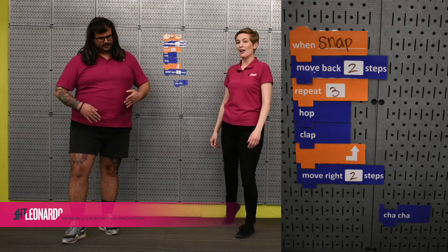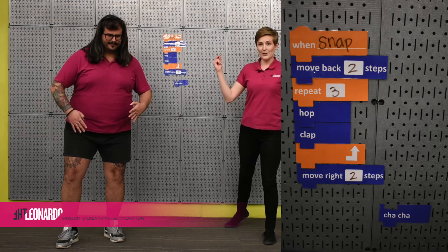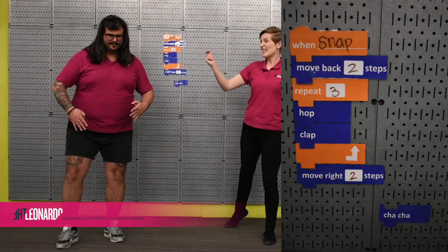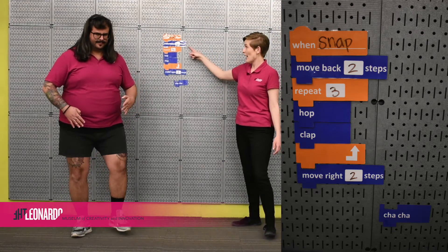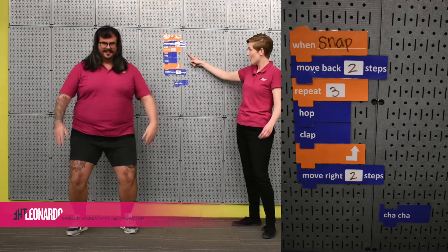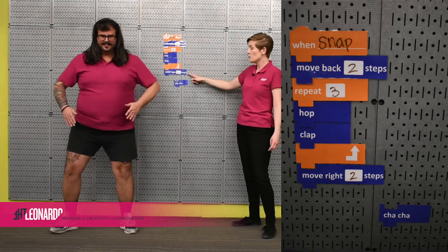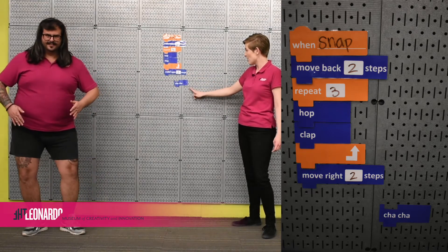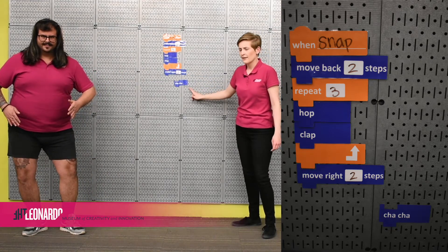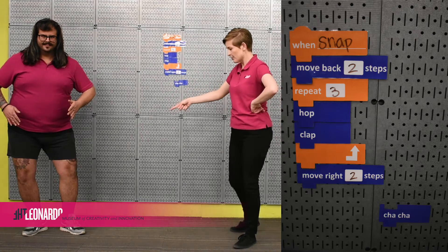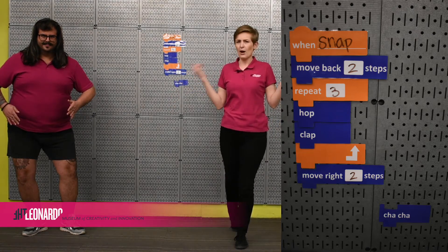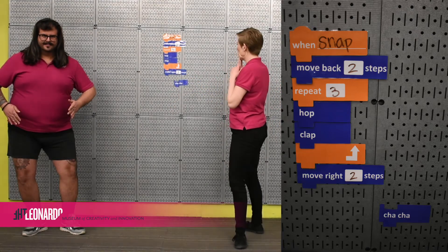Let's see if it works — let's see if my sequence is correct and if my algorithm is complete. Ready? Three, two, one — I snap. Now he's going to move back two steps. Good. Now three times: hop back, hop back, hop back. Now he moves right two steps, and now we cha-cha — wait, I'm noticing a problem. In programming we call that debugging.